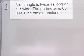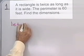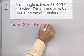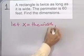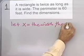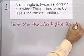Step number two, we want to assign a variable to one of the unknown items. Let's let x equal the width. Then, if x is the width and the length is twice the width, then 2x is equal to the length.